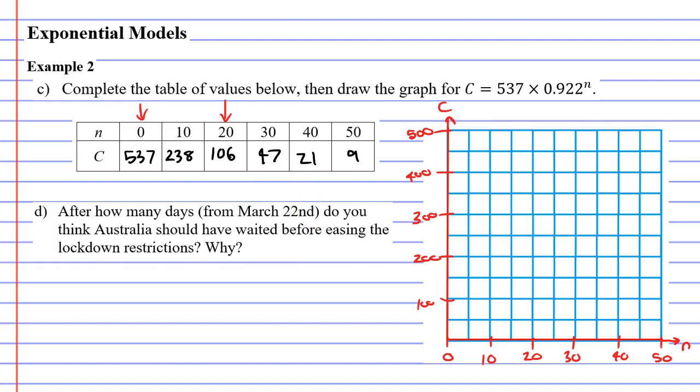So we'll start labeling our points now. So the first point being when N is 0, C is 537. Now, our graph only goes as high as 500, so we're just going to have to go off the graph a little bit, which is okay. The next point, when N is 10, C is 238. So we'll label that one. And then when N is 20, C is 106. When N is 30, C is 47. When N is 40, C is 21. And when N is 50, C is only 9.